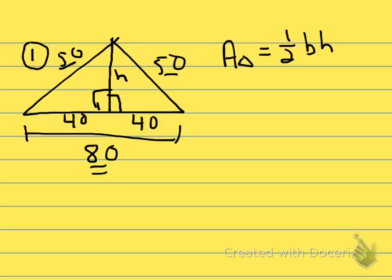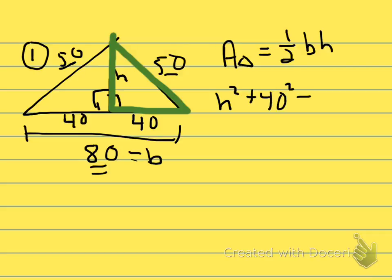So you're going to use now the Pythagorean theorem to find the height. 80 is going to be the base. So the Pythagorean theorem we'll apply to this right triangle right here. I've just highlighted in green.